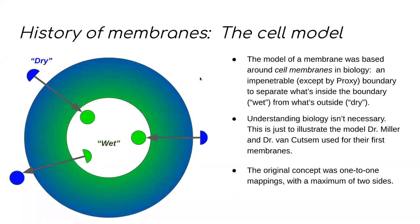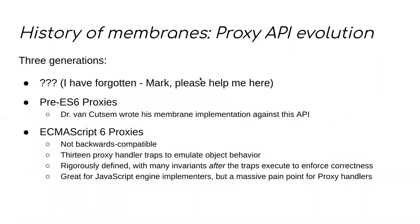Traditionally, membranes have followed a model of cell membranes in biology — you can either be inside the membrane (which is where the term 'wet' came from) or outside the membrane (dry). Only the membrane proxies which the membrane specifically creates may breach this cell wall; if anything else can, that's a bug. Each object on the wet side may have a dry proxy, and each object on the dry side may have a wet proxy. Beyond that, nothing on the dry object graph knows anything about the wet object graph, including its existence, and vice versa. This next slide is not complete, so I'll pause here for a moment to give people a chance to read it and reflect.